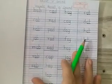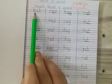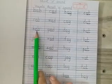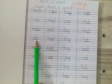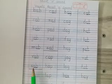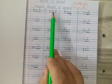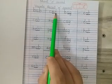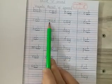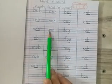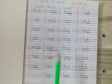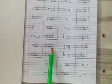Let's revise it once again. OB words: BOP, COB, HOB, JOB, MOB, ROB, SOB. OD words: COD, NOD, POD, ROD, SOD.